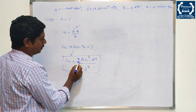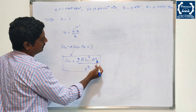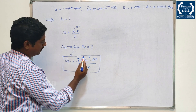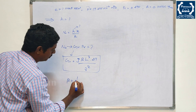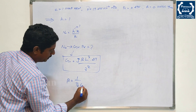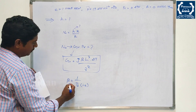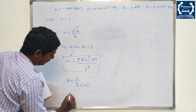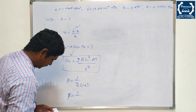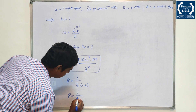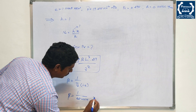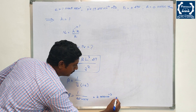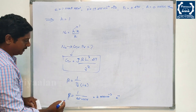The Grashof number formula uses gravity g equals 9.81, the length L, and the temperature difference ΔT, divided by ν squared. First, we find beta. Beta equals 1 divided by Tf in Kelvin. Tf in Kelvin is 65 plus 273. Solving, beta equals 2.958 × 10⁻³ per Kelvin.